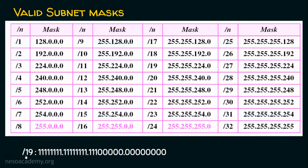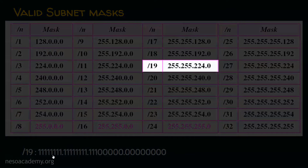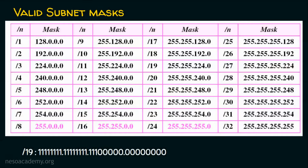For /19 there are 19 ones and 13 zeros: 8 ones in the first octet, 8 in the second, and 3 in the third. This confirms consecutive ones followed by consecutive zeros with no mixing. Similarly, /30 means 30 ones and only two zeros. Let's now see an activity to make it clearer how to identify valid and invalid subnet masks.